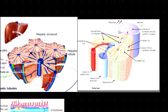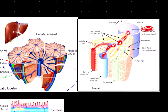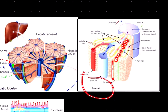As mentioned earlier, the hepatic artery carries oxygen to hepatocytes. The portal vein carries nutrition through blood to hepatocytes, where nutrients are metabolized and sent to the central vein. The bile duct collects bile produced by hepatocytes. These three structures together form the portal triad.